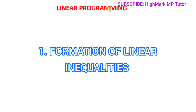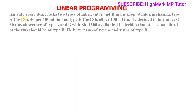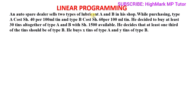Today's question is about linear programming. An autospear dealer sells two types of lubricant A and B in his shop. Purchasing type A costs 40 shillings per 100 ml tin and type B costs 60 shillings per 100 ml tin. He decided to buy at least 30 tins altogether of type A and B with 1500 shillings available, and at least one third of the tins should be of type B. He buys X tins of type A and Y tins of type B.